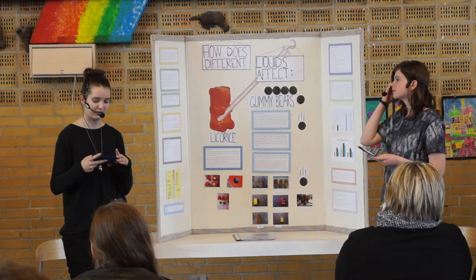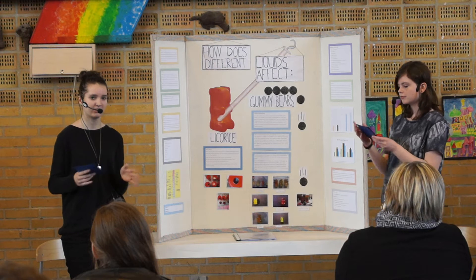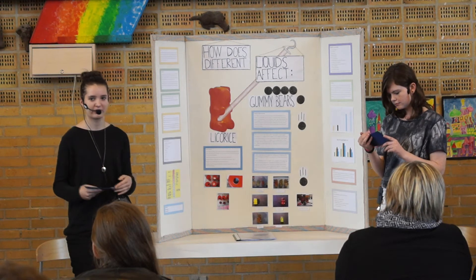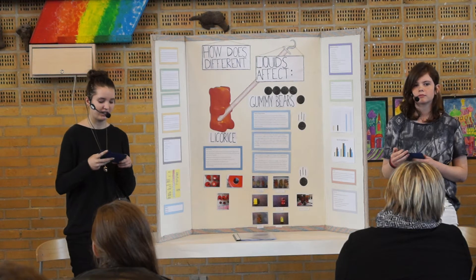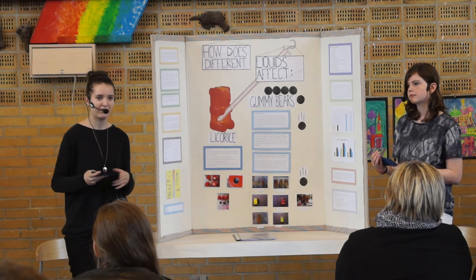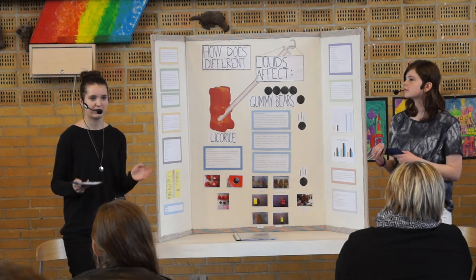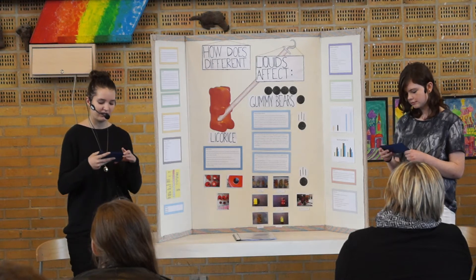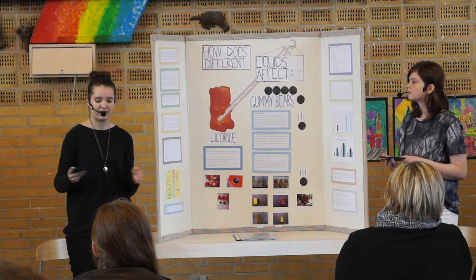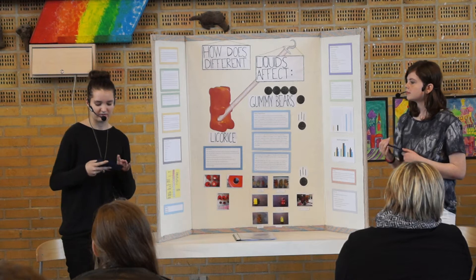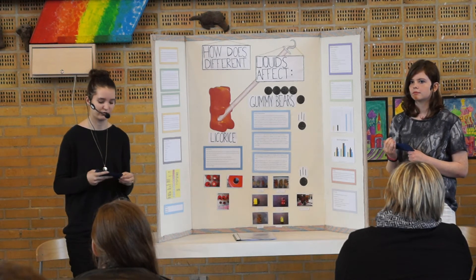We put one liquid and one gummy bear in each of five glasses. We had five different liquids: water, salt water, vinegar, Coca-Cola, and milk. Then we waited 24 hours. After 24 hours we measured them in height, width, and depth. Then we measured the difference between the candy, and we did the experiment three times to get accurate numbers.